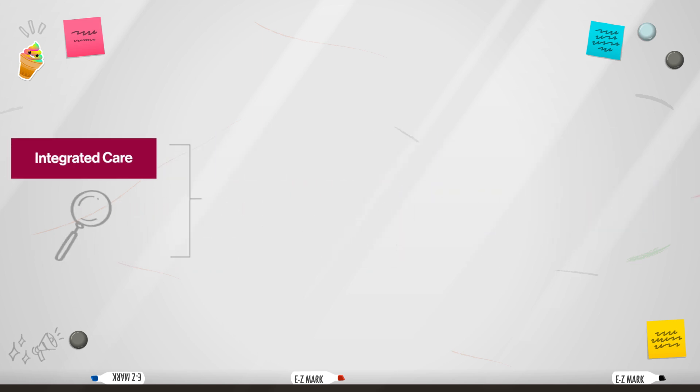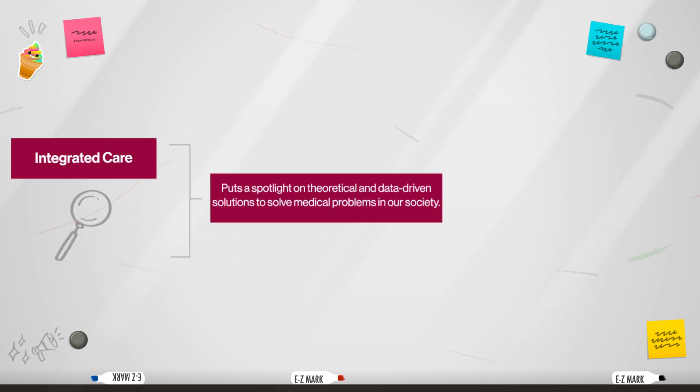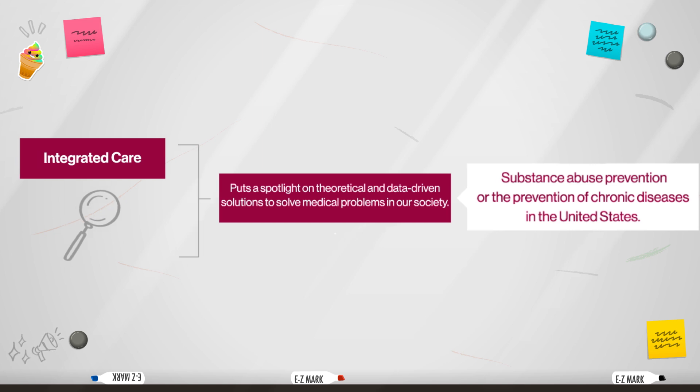The integrated care track puts a spotlight on theoretical and data-driven solutions to solve medical problems in our society. Students studying integrated care learn about things like substance abuse prevention, or the prevention of chronic diseases in the US. This might be the way to go for anyone interested in approaching problems from the perspective of groups of people and how they behave.